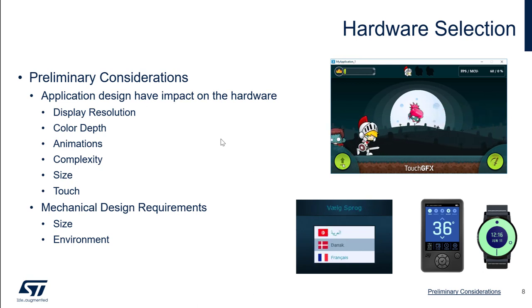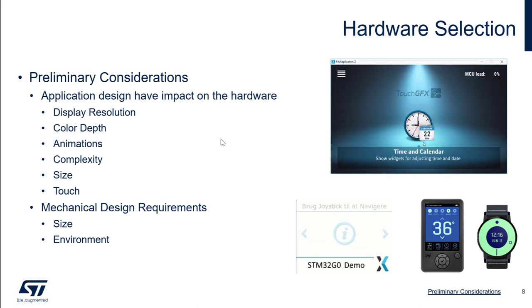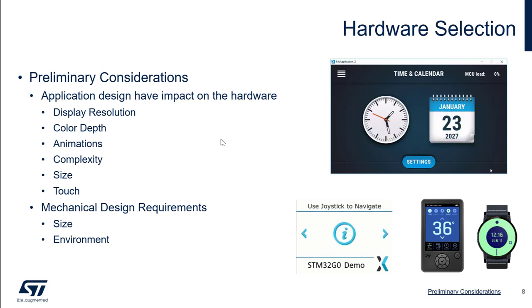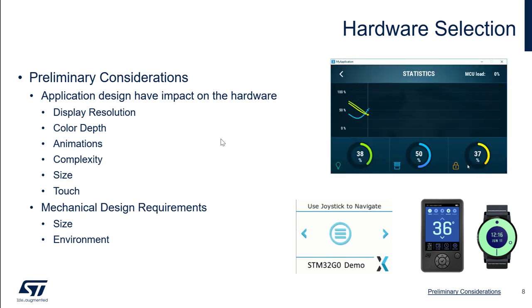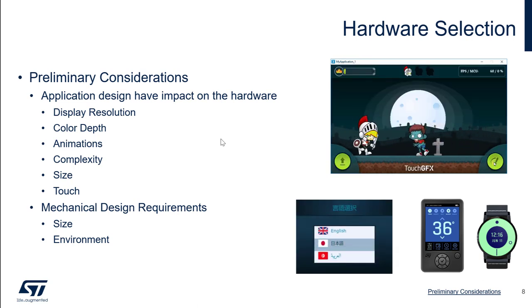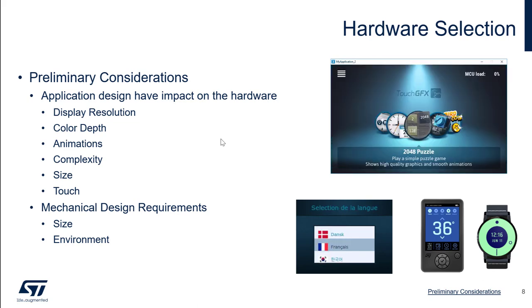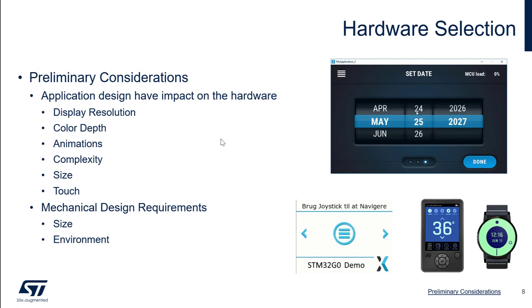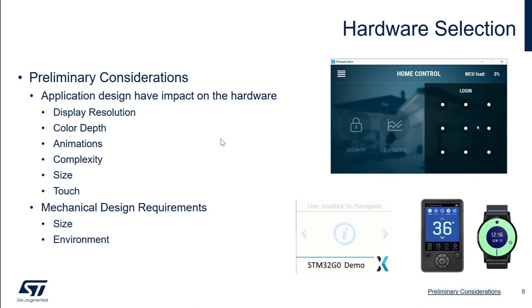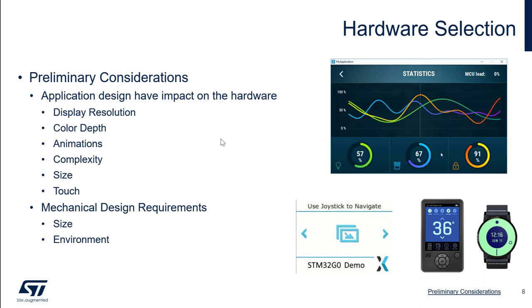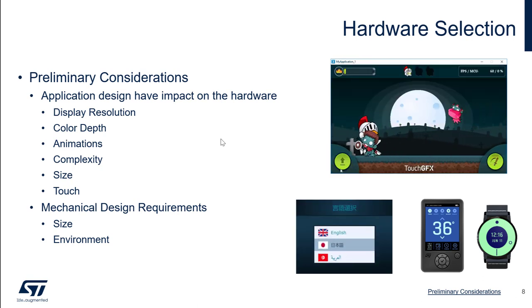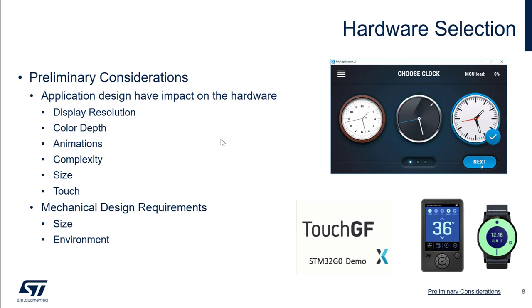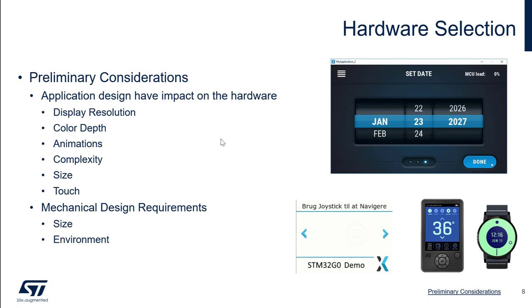Another aspect to take into account is the mechanical design requirements. One of them is size — you may already know the setup constraints that put size requirements on your solution. The environment can also be quite important. If you are using it in a standard consumer product like a coffee machine that won't be in a rough environment with water, dust, or high temperature, you may be more flexible in hardware choices compared to a smartwatch or industrial setting that needs to handle a rougher environment — for example, adding a cover lens.